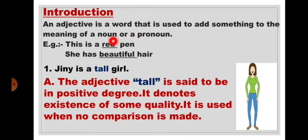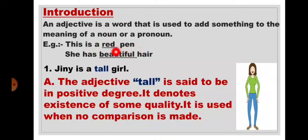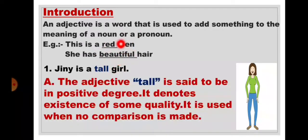An adjective is a word that is used to add something to the meaning of a noun or pronoun. For example, this is a red pen. She has beautiful hair. Here, red describes the noun pen, and beautiful describes the pronoun she. So red and beautiful are adjectives.